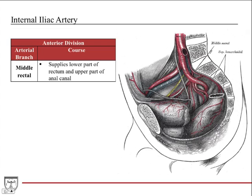Then you have the middle rectal artery, and we're getting towards the end of all these branches. The middle rectal artery comes off and swings off the anterior division, and it supplies the lower part of the rectum and then the upper part of the anal canal.